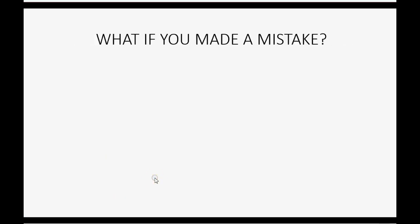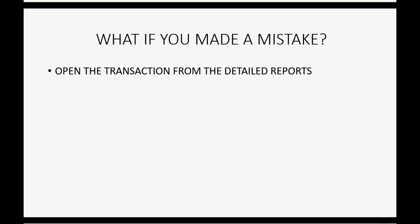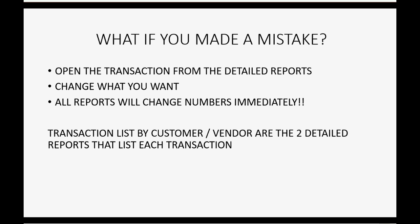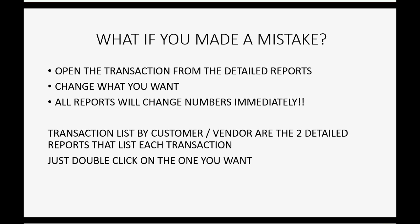Now here's the big question: what if you made a mistake? It's very simple to fix — just open the transaction from the detailed report, change what you want to change, and all reports and the numbers in those reports will change immediately. The quickest way is to go to Transaction List by Customer or Transaction List by Vendor, which are two detailed reports that list each transaction. Double-click the one you want to change and save.